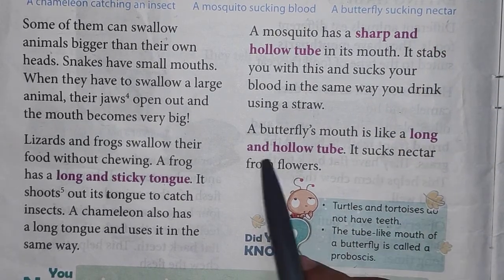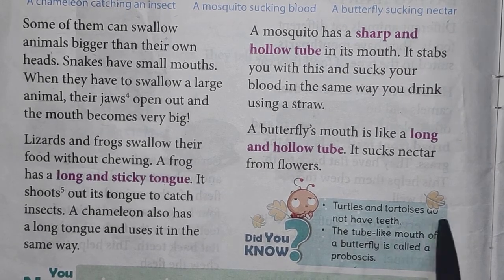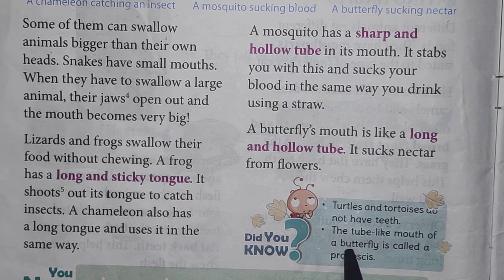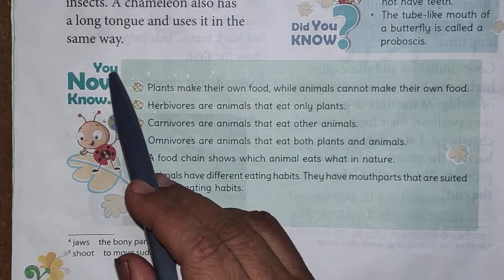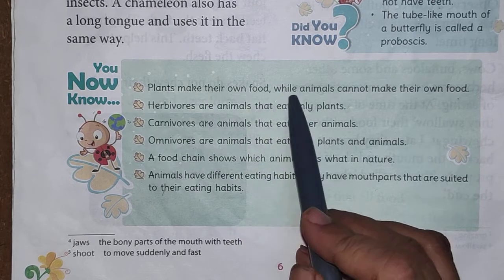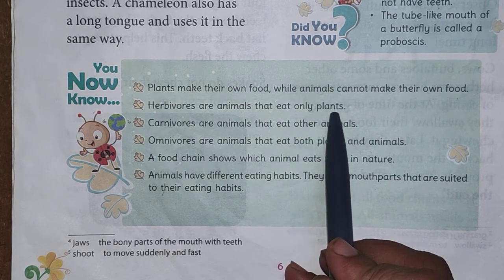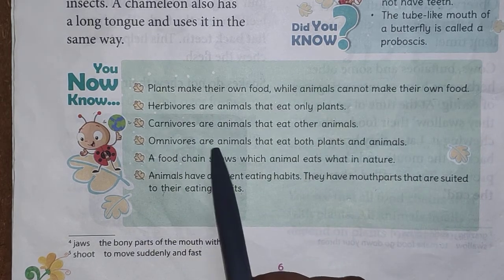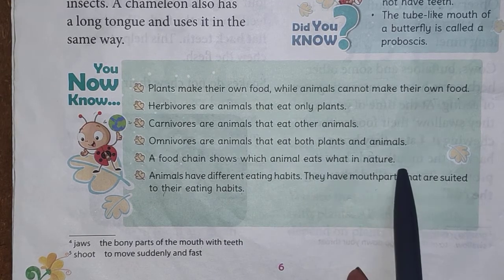Turtles and tortoises do not have teeth at all, but they are still able to eat. The tube-like mouth of a butterfly is called a proboscis. Now let us revise: plants make their own food while animals cannot. Herbivores eat only plants. Carnivores eat the flesh of other animals. Omnivores eat both plants and animals. A food chain shows which animal eats what in nature.